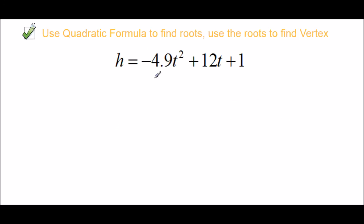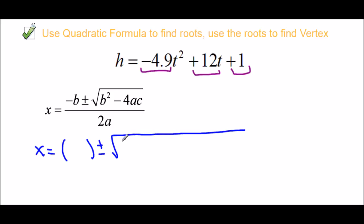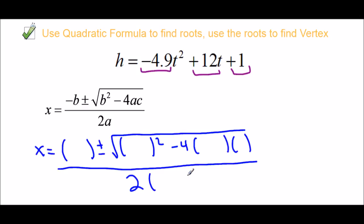Here is the equation: h equals negative 4.9 t squared plus 12t plus 1. We're going to use the quadratic formula. To use it, I have to identify a, b, and c. Negative 4.9 is a, positive 12 is b, and positive 1 is c. I like to first write the formula with blank brackets and then substitute in, because trying to recall values while writing the formula at the same time makes it easy to make mistakes.